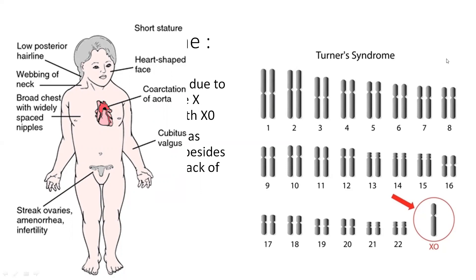So these three chromosomal disorders are important. First is Down syndrome — trisomy of the 21st chromosome. Klinefelter syndrome — a male trisomy with XXY. And Turner syndrome — monosomy, which occurs in a female with only one X chromosome.